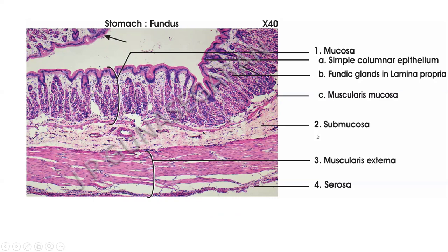This is a section of fundus showing all layers. The mucosa is lined by simple columnar epithelium which dips in as depressions known as gastric pits. Deep to the epithelium is the lamina propria, which contains vertically oriented fundic glands reaching up to the muscularis mucosa made of smooth muscle — inner circular and outer longitudinal. The submucosa carries blood vessels. The muscularis externa has three layers of smooth muscle: the innermost oblique layer, middle circular layer, and outer longitudinal layer. Externally there is a peritoneal covering, the serosa.